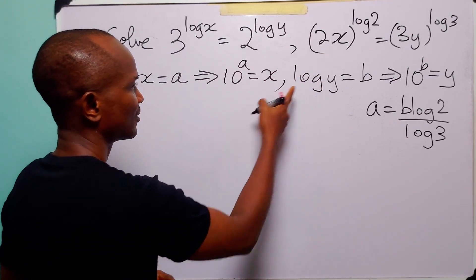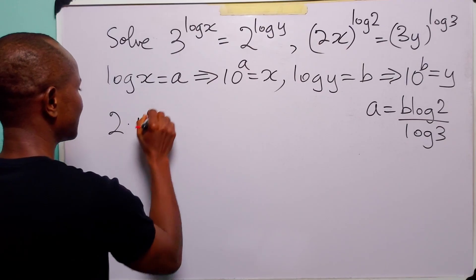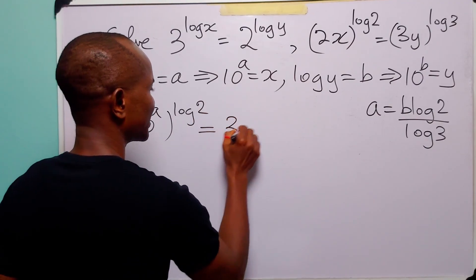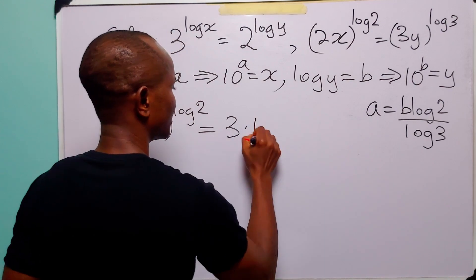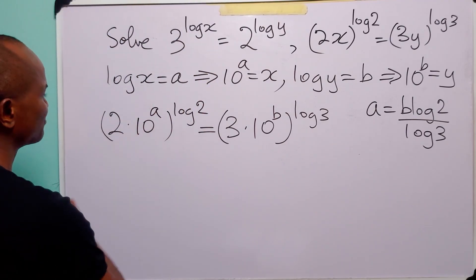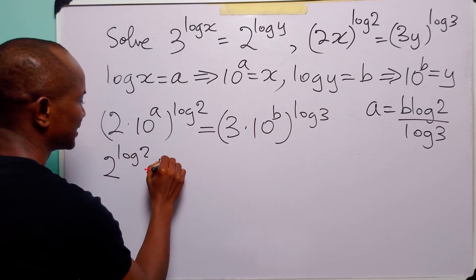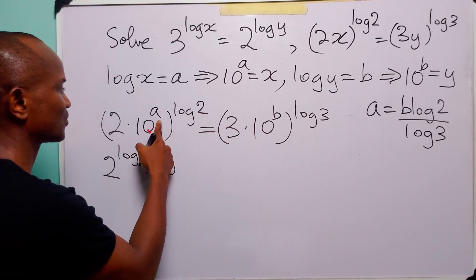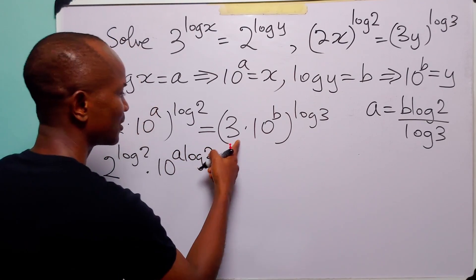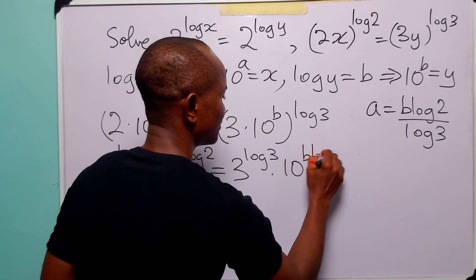Coming to the second equation, with these two substitutions we have 2 times — remember x is now 10 to the power a — to the power log 2, is equal to 3 times — y is now 10 to the power b — to the power log 3. Opening up the brackets we have 2 to the power log 2, multiplied by 10 to the power a times log 2 — since when we have two powers we multiply them — is equal to 3 to the power log 3, multiplied by 10 to the power b times log 3.